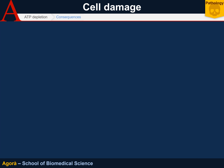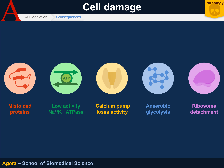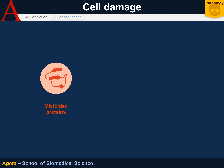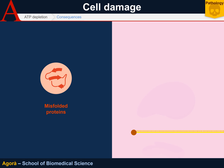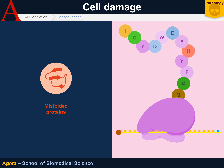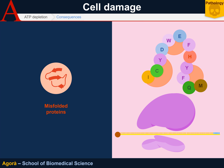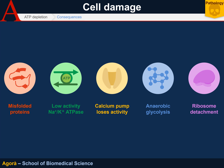ATP depletion blocks a large number of processes maintaining the cell active, among which is protein folding. It is not rare to see misfolded proteins, since protein synthesis requires a great amount of energy. When energy is insufficient, ribosomes detach from the mRNA strands and the synthesized protein will misfold, in most cases only partially. For this reason, chaperonins — systems for protein recovery to refold proteins — will come into action, though they are produced only in extreme conditions and their response is limited.